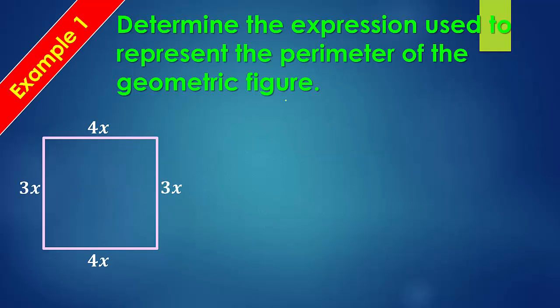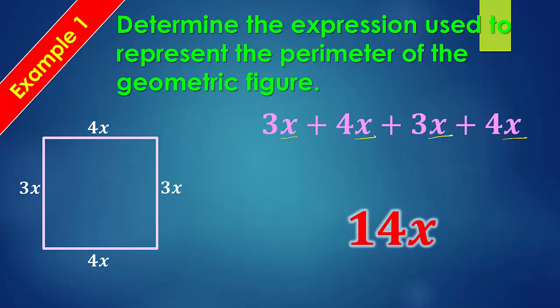Determine the expression used to represent the perimeter of the geometric figure. So this, even though it looks like a square, is not because you can tell that the opposite sides are equal but not all four sides are equal. So what you want to do for this is basically, we've got 3x plus 4x plus 3x plus 4x, add them all together so they all have x with them. Since they all have x, we can just add the numbers in front. So 3 plus 4 plus 3 plus 4 gives us an answer of 14x.